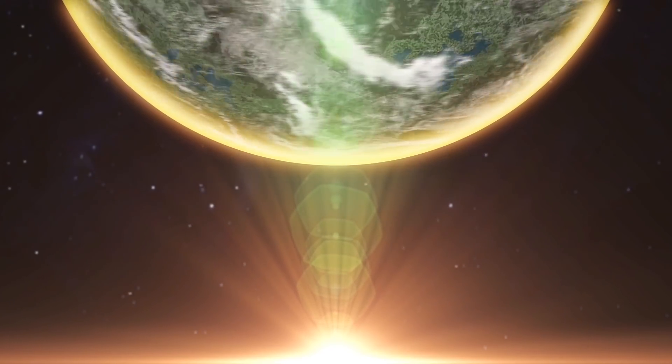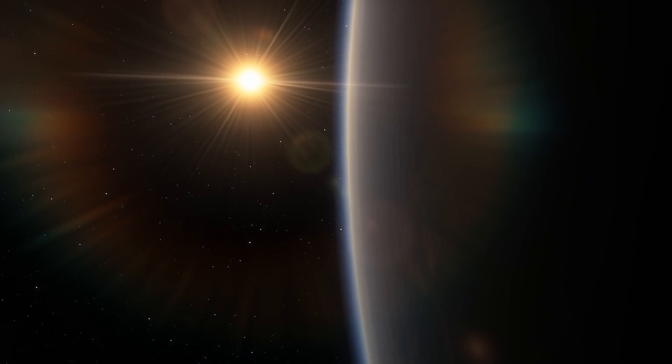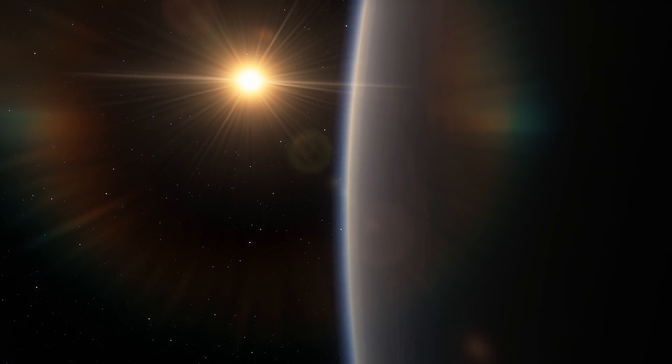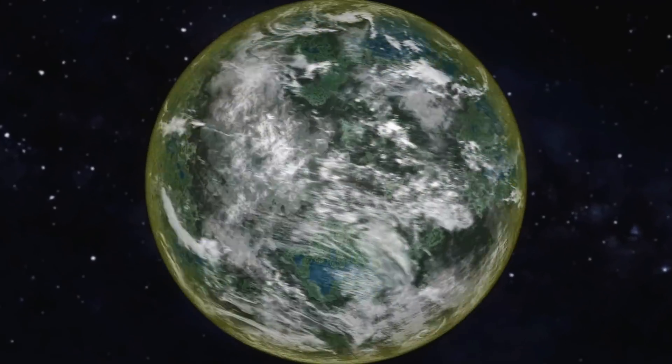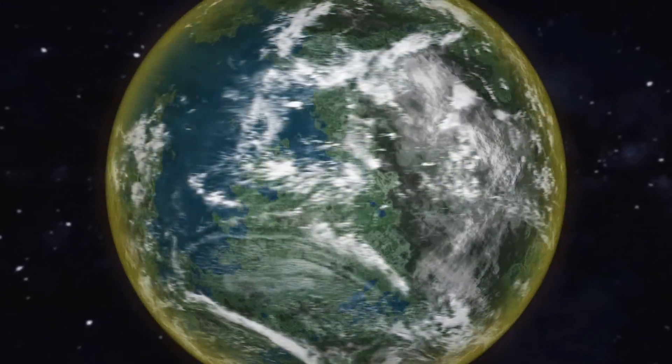However, some scientists don't see this as a problem. After all, if Proxima b has an atmosphere and oceans, they could ease extreme temperature changes. Given that this exoplanet is more massive than Earth, it could hold both air and water.